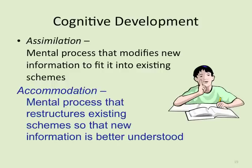Accommodation is the mental process that restructures existing schemes so that new information is better understood. With the same scenario: the baby eventually recognizes the block has square sides, so it doesn't roll — it's different from a ball even though both can be held in one hand. Accommodation is updating old ideas to fit new information, while assimilation is trying to make old information work with the new, even when it probably won't.